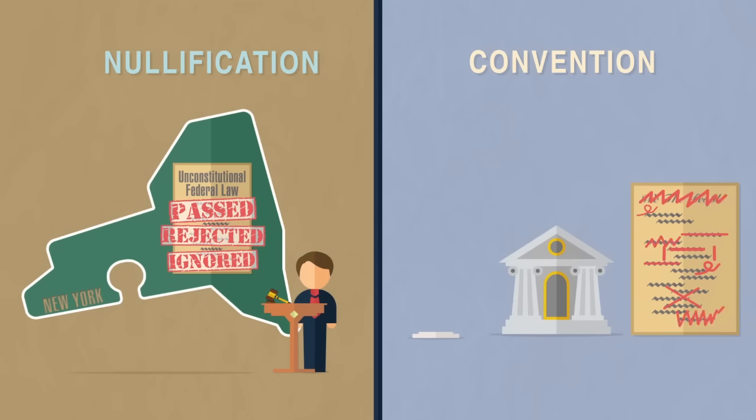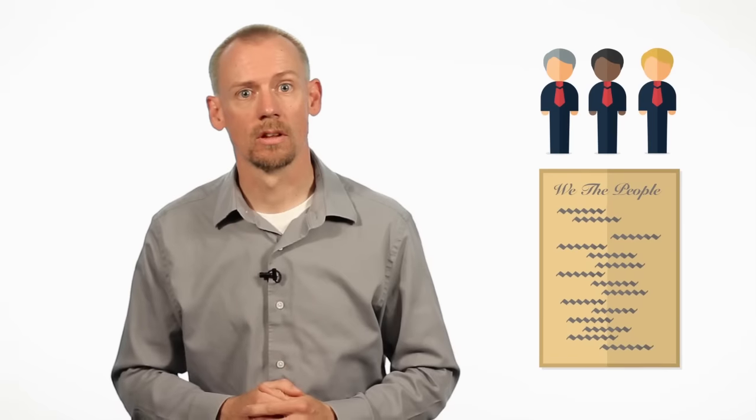So what do you feel more comfortable with? Americans are correct when they say our government is out of control and that something needs to be done. What many don't realize is that the Constitution is not the problem. It is our elected officials who are not obeying the Constitution.